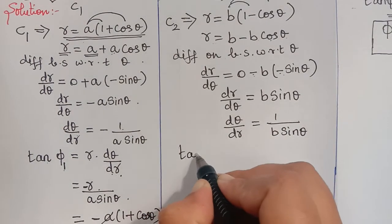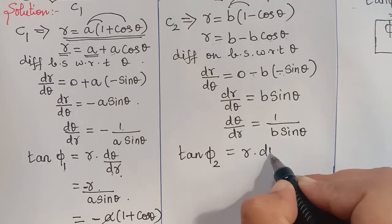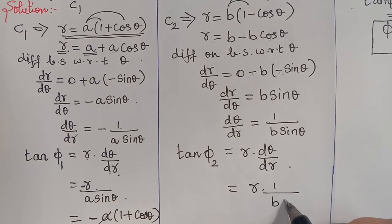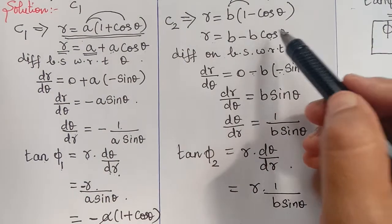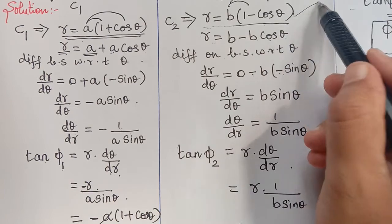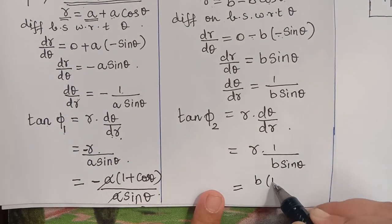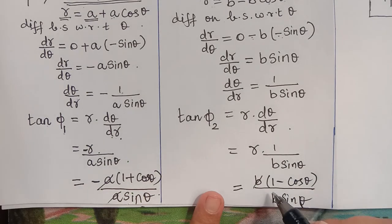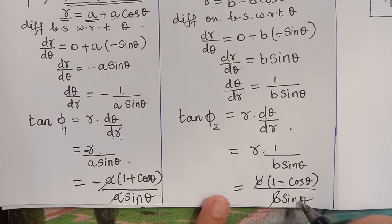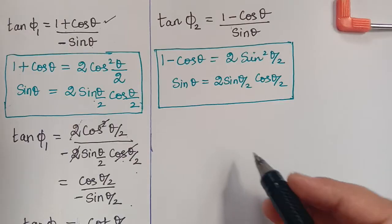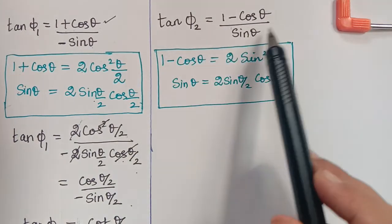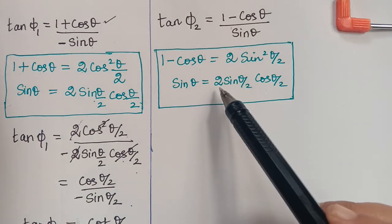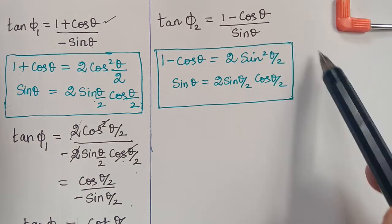Now substituting in the formula: tan(phi2) = r · dθ/dr = r · (1/(b·sin theta)). Substituting r = b(1 − cos theta), we get tan(phi2) = b(1 − cos theta) / (b·sin theta). The b's cancel, leaving tan(phi2) = (1 − cos theta) / sin(theta). We now apply trigonometric identities: 1 − cos(theta) = 2sin²(theta/2), and sin(theta) = 2sin(theta/2)cos(theta/2).